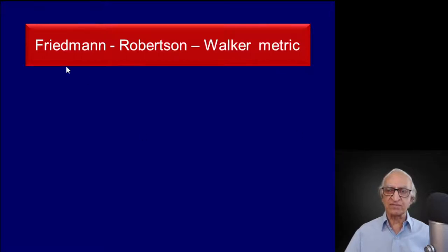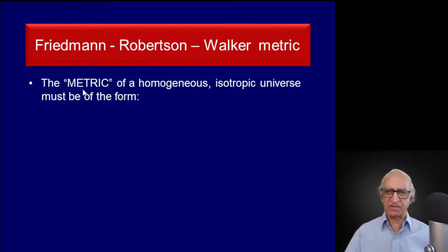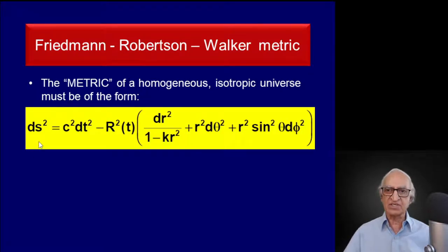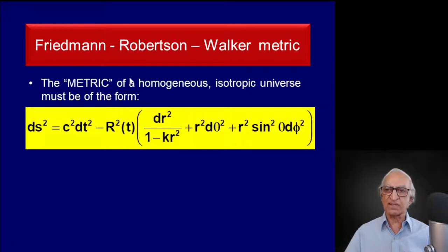Based on this, Friedman made a very important discovery. He argued that the metric — the way you measure distances between two points of a homogeneous isotropic universe — must be of the form dσ² = c²dt² multiplied by what is given in the bracket, including the new term R²(t). This metric was later independently arrived at by Robertson and Walker, and is referred to in the literature as the Friedman-Robertson-Walker metric, though it was Friedman who first stated it.